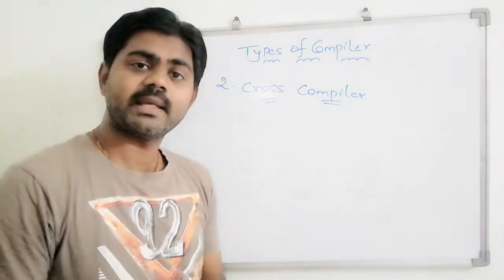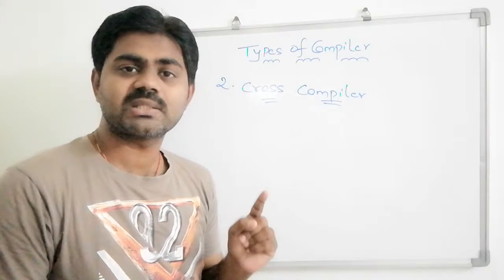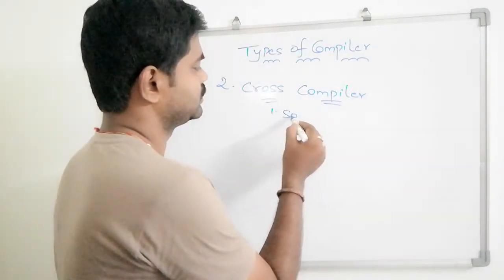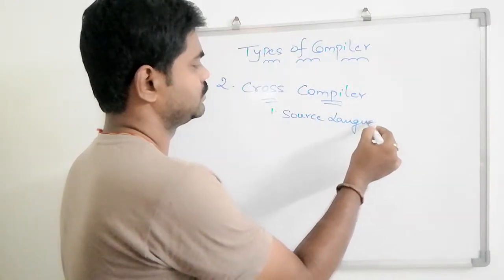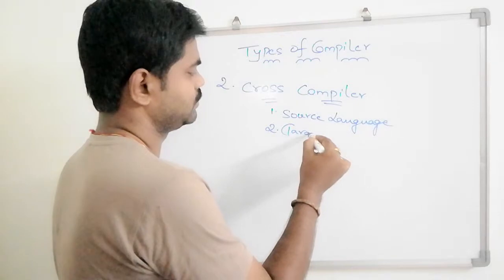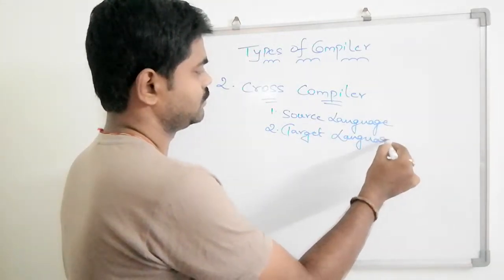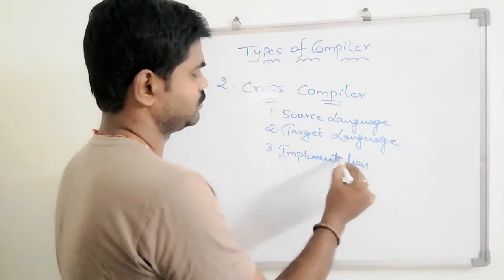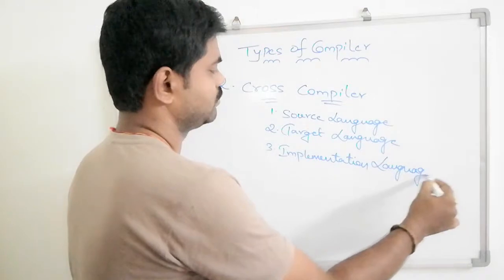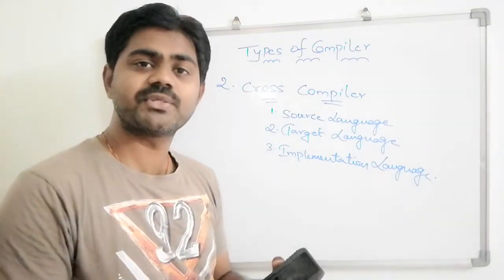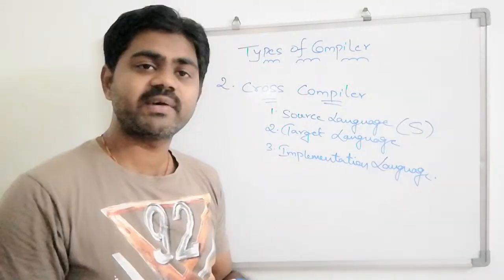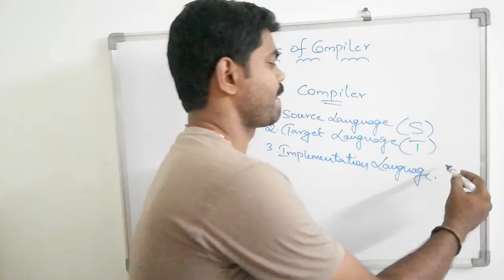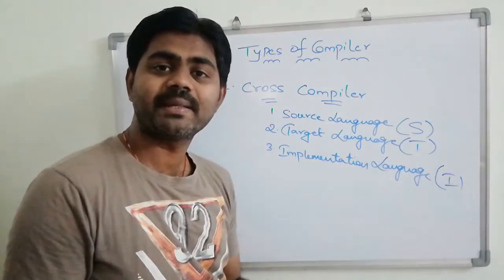In a cross compiler we have three major things: source language, target language, and implementation language. I'll call them S, T, and I respectively. A typical cross compiler is represented using these three components.